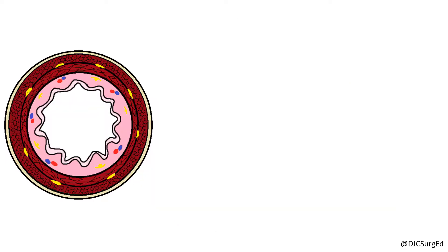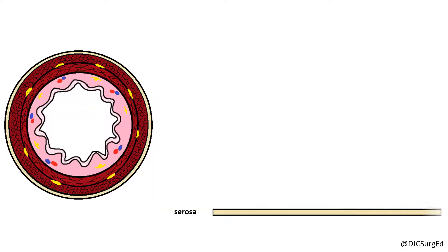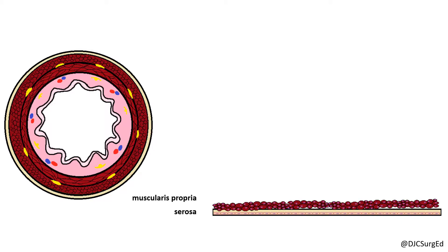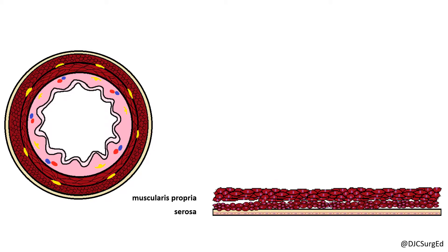The serosa is the outermost layer of the small intestine and consists of visceral peritoneum, a single layer of mesoepithelial cells. The muscularis propria consists of two muscle layers: an outer longitudinal layer and an inner circular layer of smooth muscle. Ganglion cells from the myenteric or Auerbach plexus are interposed between the muscle layers and send neural fibers into both layers.